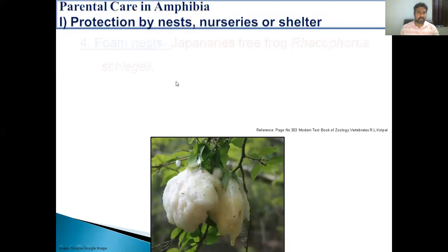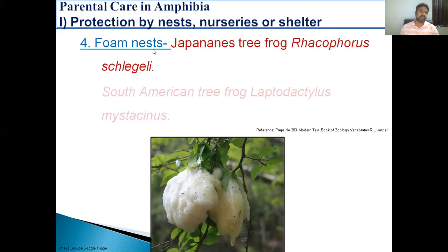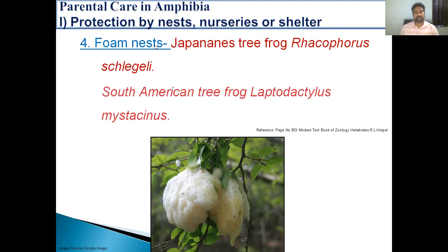The next way is the foam nest. In this case, the parents secrete mucus which forms a foam nest in which they lay their eggs. For example, the Japanese tree frog, Rhacophorus, Chirixalus, and the South American tree frog, Leptodactylus mystaceus, form such type of foam nest.